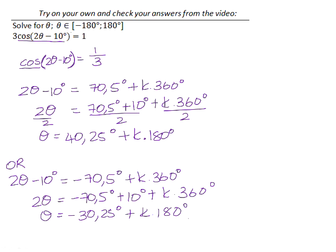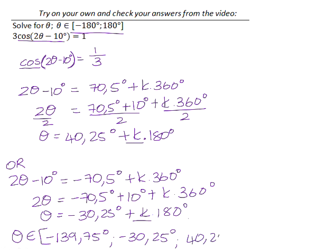We were asked to find values for theta between negative 180 degrees and 180 degrees. So we now need to substitute values for k in place of k in our final solutions to find angle values that lie within the negative 180 to 180 interval. So if we start off with negative 1 as a k value, 40.25 minus 180 will give you negative 139.75 degrees. Negative 30.25 minus 180 will be too small, so we don't worry about that one. If we make k equal to 0, we will have a value of negative 30.25, and we will have a value of 40.25. If we make k positive 1, this becomes too big. 40.25 plus 180 is larger than 180 degrees, but negative 30.25 plus 180 does fall within the interval, and it's 149.75 degrees.